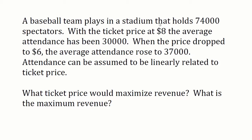A baseball team plays in a stadium that holds 74,000 spectators. With the ticket price at $8, the average attendance has been 30,000. When the price dropped to $6, the average attendance rose to 37,000. Attendance can be assumed to be linearly related to ticket price. So what ticket price would maximize revenue?